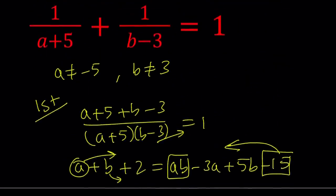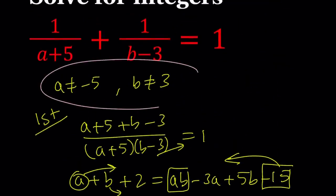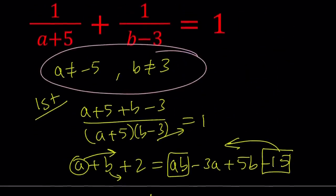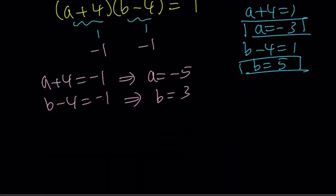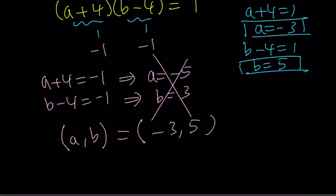But pay attention to this. a cannot be negative 5. b cannot be positive 3. Therefore, this is not possible. So that leaves us with one ordered pair for the solution. a comma b can only be negative 3 comma 5. And they're not interchangeable. All right? Cool.